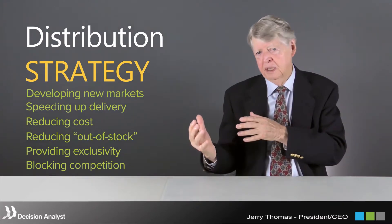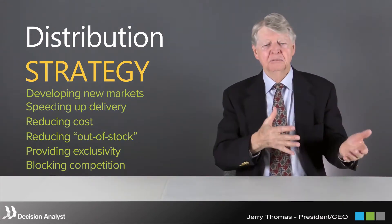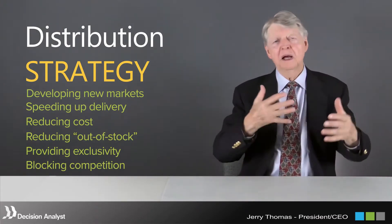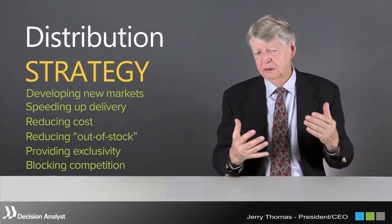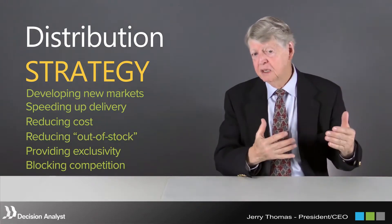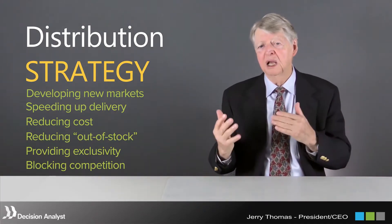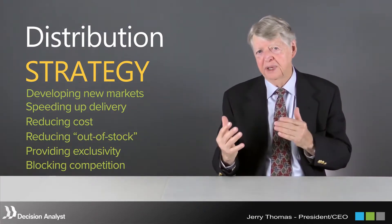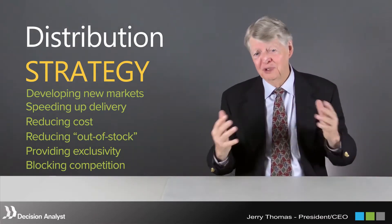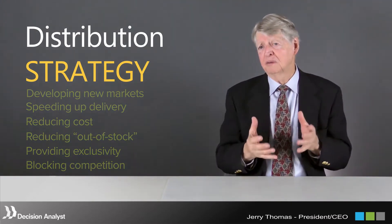The last role that distribution can play in strategy is to block or blunt a competitor. If a major competitor is moving into your marketplace or opening up a new channel of distribution, you may choose to open up that same channel as a way to block them. These are not the only ways distribution can play a role in strategy, but they are the primary ways.